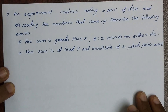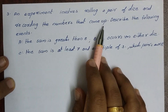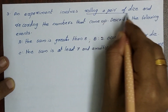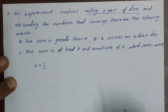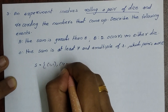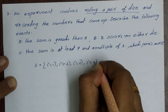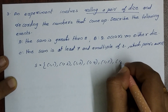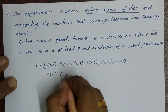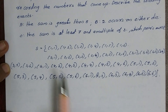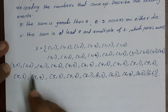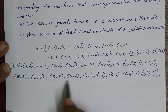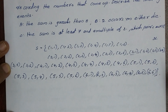An experiment involves rolling a pair of dice and recording the numbers that come up. Describe the following events. Rolling a pair of dice gives a sample space with pairs (1,1), (1,2), (1,3), (1,4), (1,5), (1,6), (2,1), (2,2), and so on up to (6,6) — a total of 36 sample points.